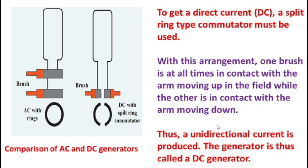In the AC generator, the direction of current changes in every half rotation. In the first half rotation, the current flows in the coil in the ABCD direction, and in the outer circuit it flows B2 to B1. During the second half rotation, the direction of current in the coil changes to DCBA, and in the outer circuit it flows from B1 to B2.